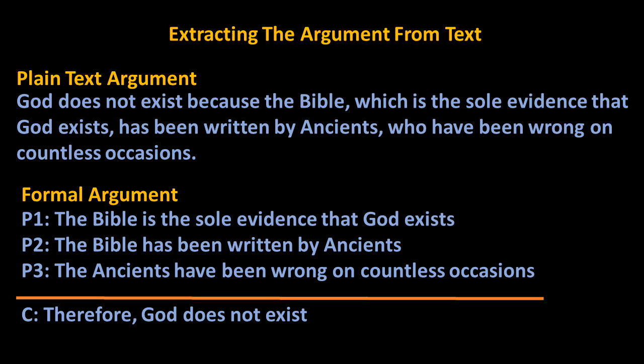Often the premises are mentioned first, but sometimes it is the conclusion that appears first in the passage. Consider the following paragraph: 'God does not exist because the Bible, which is the sole evidence that God exists, has been written by ancients who have been wrong on countless occasions.' The conclusion of this argument is: God does not exist. The premises include: the Bible is the sole evidence that God exists; the Bible has been written by ancients; and the ancients have been wrong on countless occasions. Once one identifies the premises, it also becomes easier to evaluate the argument. For our purposes, however, we are only concerned with the recognition of arguments and their minimum structure — their premises and conclusion.